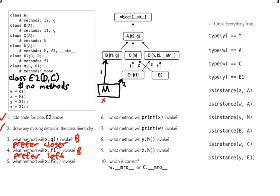The last one: what method will x.f2 invoke? Where are the two f2s? I have one here — the A version — and here's another f2, the D version. So I really have the A version or the D version. Looking at the rules we have so far, you'd probably say I prefer A because it's to the left. But it turns out there's one more rule: prefer descendants.